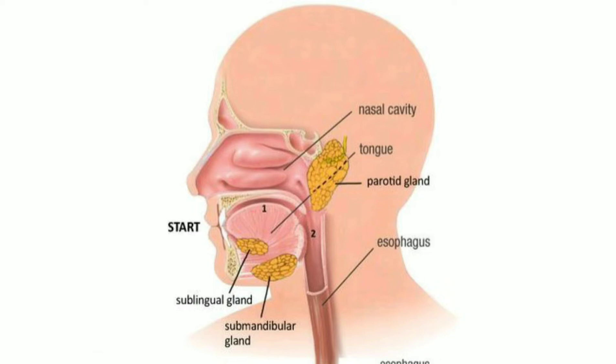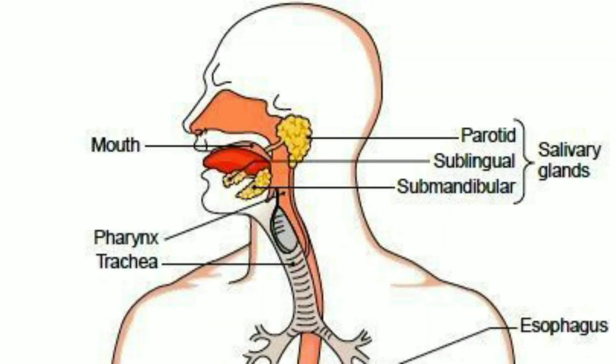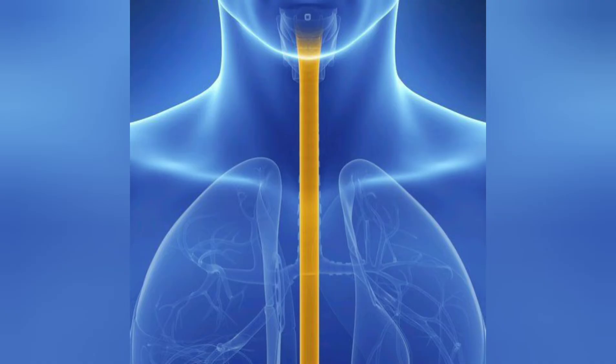This stage includes the mechanical breakdown of food by chewing and the chemical breakdown by digestive enzymes that takes place in the mouth. Saliva contains digestive enzymes called amylase and lingual lipase, secreted by the salivary glands and serous glands on the tongue. Chewing mixes the food with saliva, beginning the mechanical process of digestion. This produces a bolus which can be swallowed down the esophagus to enter the stomach.